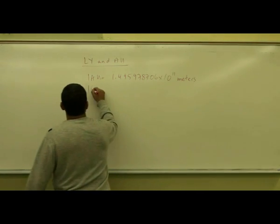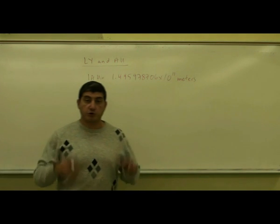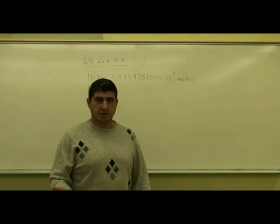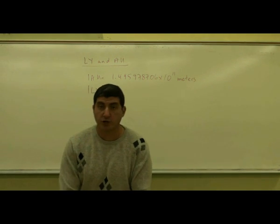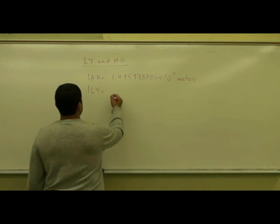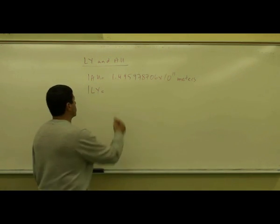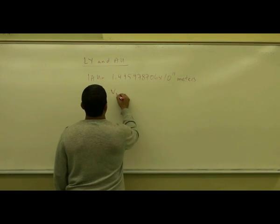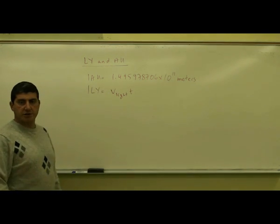The light year is the distance that light travels in one year. So if you were to travel at the speed of light, imagine how far you would go. How do we calculate the light year? You take the speed of light. The light year is a unit of distance. So you take the velocity of light, you multiply it by T, which is one year.